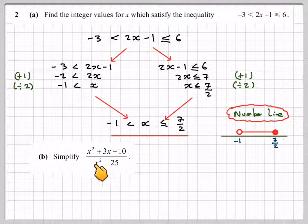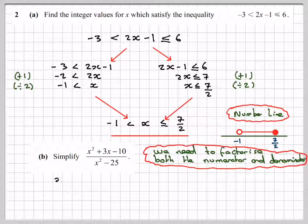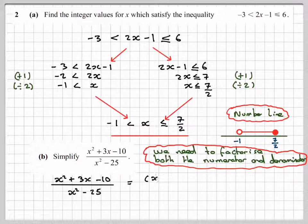Simplify x² + 3x - 10 divided by x² - 25. So to simplify these sort of things, we have to factorise. So we need to factorise both the numerator and the denominator. If we write that out, we look at the top. To factorise it, we need to factorise it into two brackets. It's quite an easy one. The factors of -10 are 2 and 5.